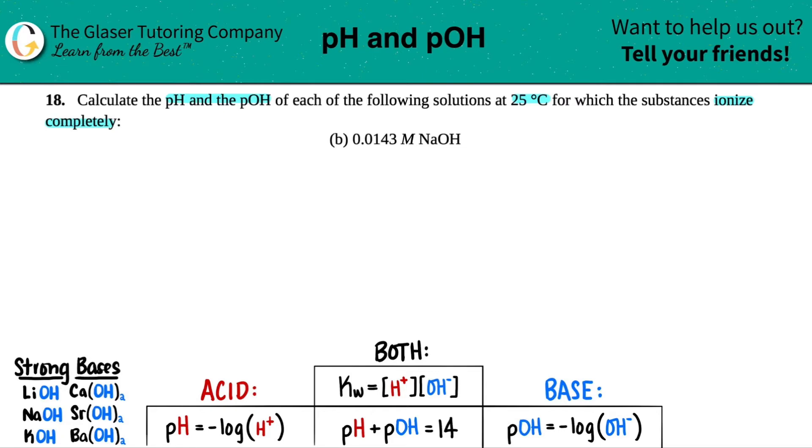Now in this case, we just need to memorize our strong bases because NaOH is on the list. All of these strong bases, your six strong bases will ionize completely, meaning they will break down into their ions 100% of the time. And because of that, we got to write an equation.